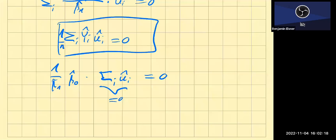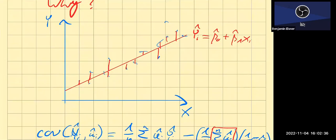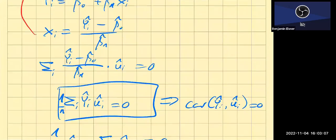We can multiply both sides by β̂₁ so the fraction cancels out, and then multiply both sides by 1/n. That's exactly what we wanted to show. So if that holds true, the covariance between the residuals and the fitted values must also be zero. Wherever you are on the regression line — whether at a high point or a low point — there is no correlation between your position on the line and the size of the residuals. These two are uncorrelated, and that follows directly from the way the OLS estimator is constructed.